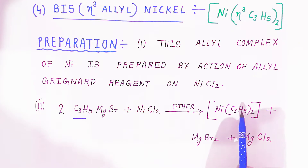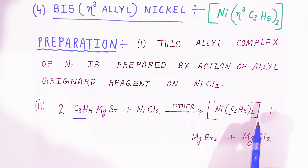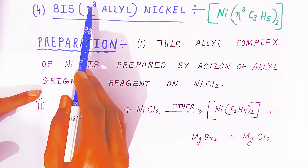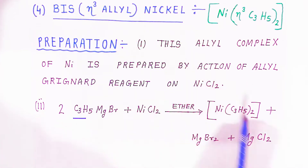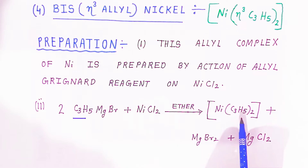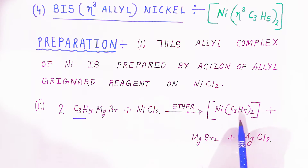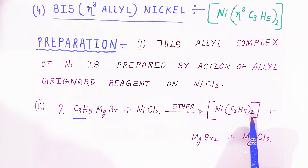This is because two molecules of C₃H₅ are donating all three electrons — all three carbons are participating in the bonding. That is why it is called eta-3, meaning it is a trihapto ligand. Allyl is a trihapto ligand: all three carbon atoms of the allyl group are involved in bonding with the nickel.